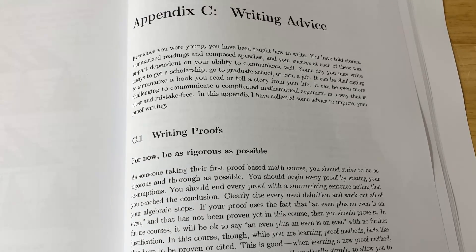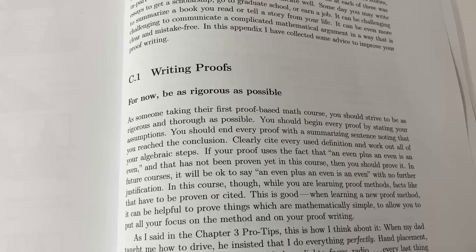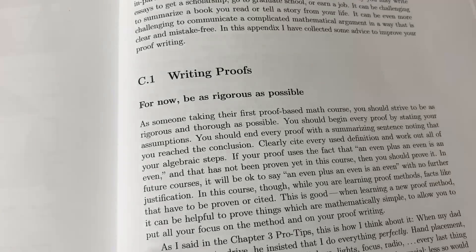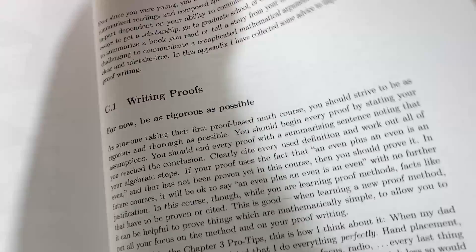Appendix C is absolutely a goldmine. It talks about writing proofs and it gives some really good, realistic, solid advice. Here, he talks about, for now, be as rigorous as possible. But, let me show you something else.